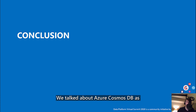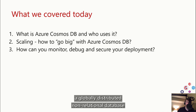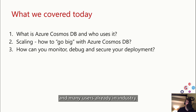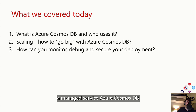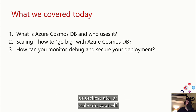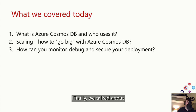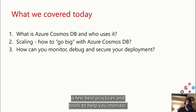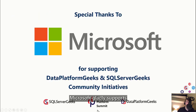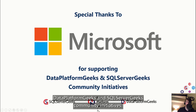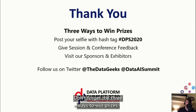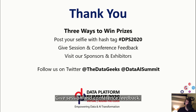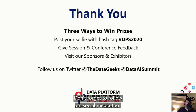So that about wraps up security. Thanks to everyone who joined today. We talked about Azure Cosmos DB as a globally distributed non-relational database with competitive SLAs and many users already in industry. We showed how Azure Cosmos DB scales out and how, being a managed service, it is really easy to scale because you don't need to manage servers or orchestrate scale out yourself. And finally, we talked about a few best practices and tools to help you monitor, debug, and secure your deployment. Microsoft gladly supports data platform geeks and SQL server geeks community initiatives — thanks a lot for your effort in setting up this event. Don't forget the three ways to win prizes: post your selfie with the tag DPS2020, give session and conference feedback, and visit our sponsors and exhibitors. Don't forget to follow on social media too.